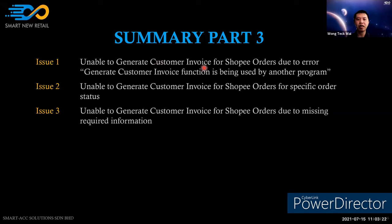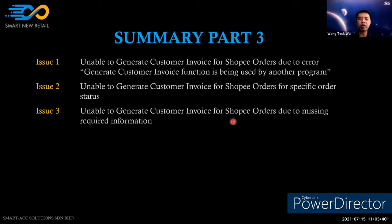Summary of Part 3: the three customer invoice issues are — function being used by another program; specific order status preventing generation; and missing required information. The same troubleshooting approach applies to sales order and customer invoice issues.